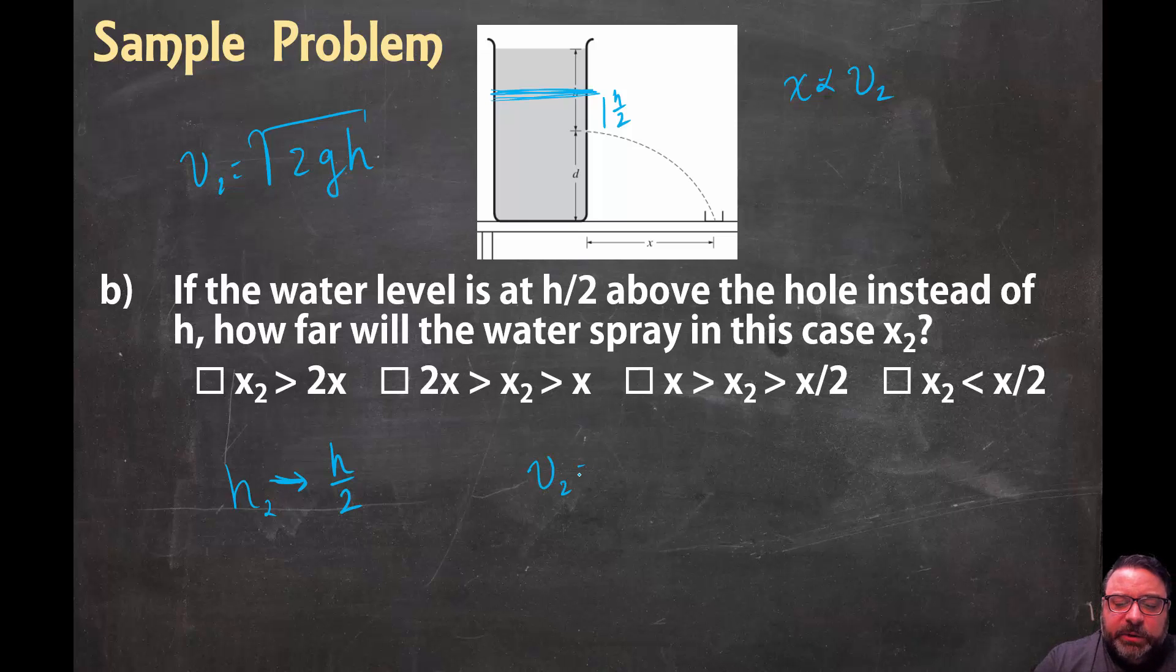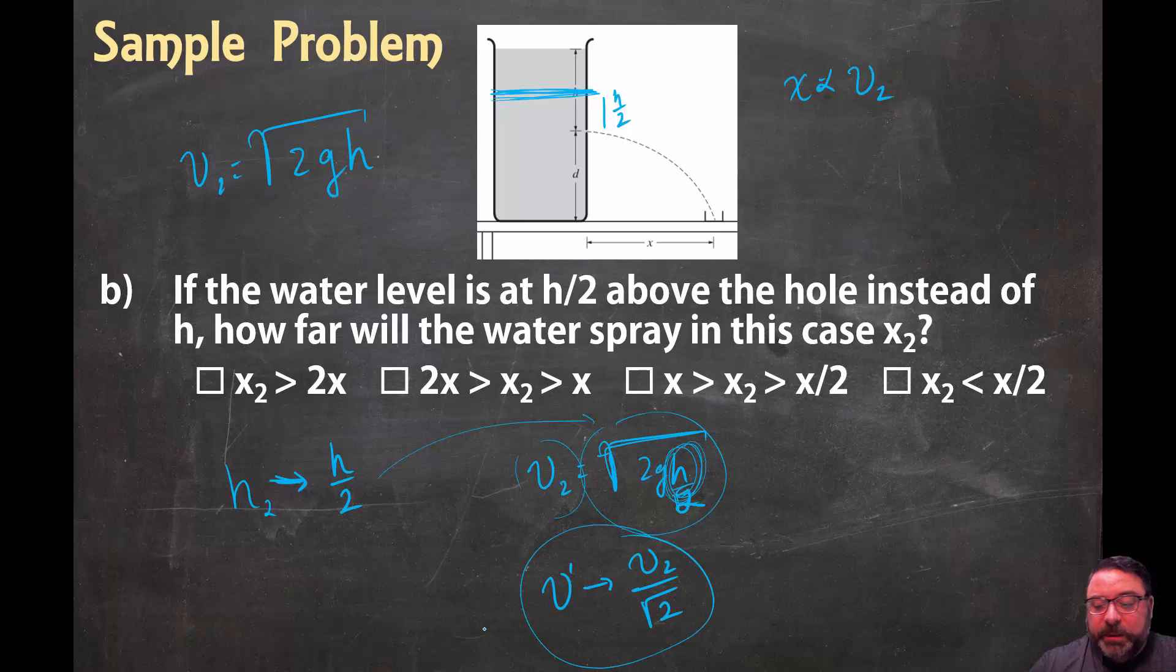And if velocity is equal to square root of 2gh, and h goes to H over 2, I can kind of see, if this becomes H over 2, this is going to become, now, you've got to be careful, this is underneath a radical, under the square root sign. So my new velocity, my velocity in our new case, is going to become whatever it was before, divided by the square root of 2. Since this gets divided by 2, this is under a radical, my velocity gets divided by the square root of 2, which is about, so now 1 over the square root of 2 is about 0.7. So my velocity becomes 0.7 of what it was before.